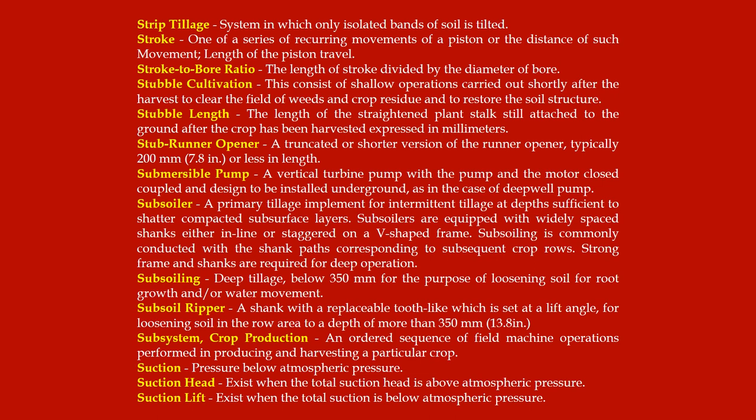Stubble cultivation: consists of shallow operations carried out shortly after harvest to clear the field of weeds and crop residue and to restore the soil structure. Stubble length: the length of the straightened plant stock still attached to the ground after the crop has been harvested, expressed in millimeters.